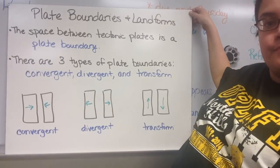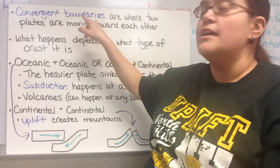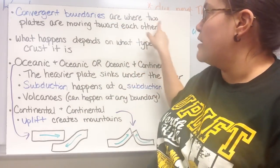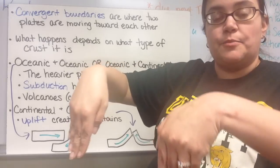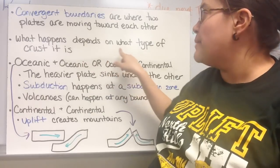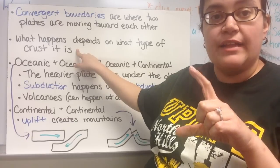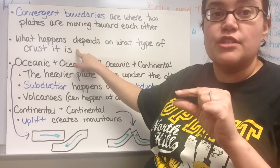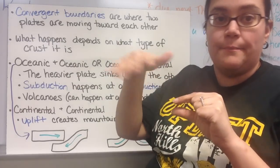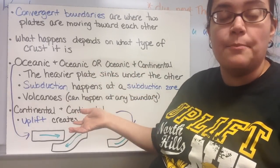The first type of plate boundary we're going to talk about is convergent. The word converge means to come together, so convergent plates are coming together — two plates moving towards each other. What happens at this plate boundary depends on what type of crust it is. You can have continental crust, which is thicker and where the continents are because it sticks up higher, and you can also have oceanic crust, which is thinner and where the oceans are. So what happens at this boundary depends on what type of crust you have.